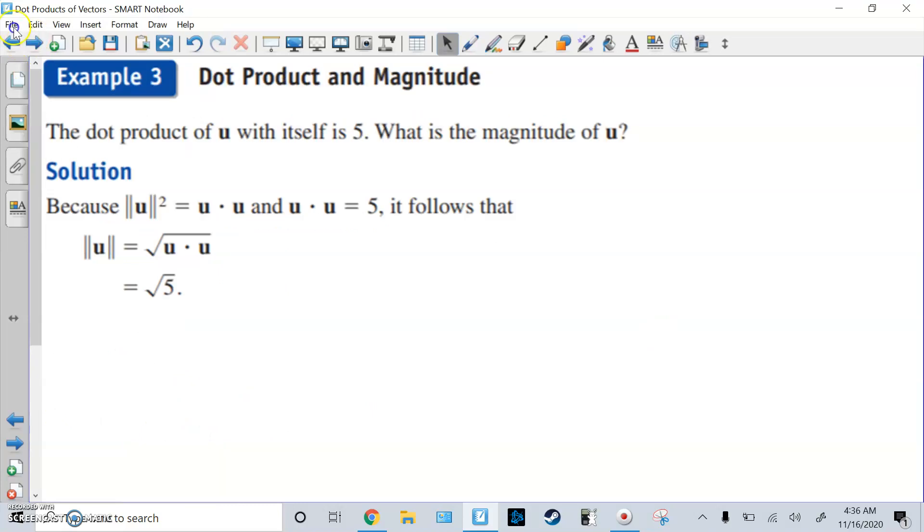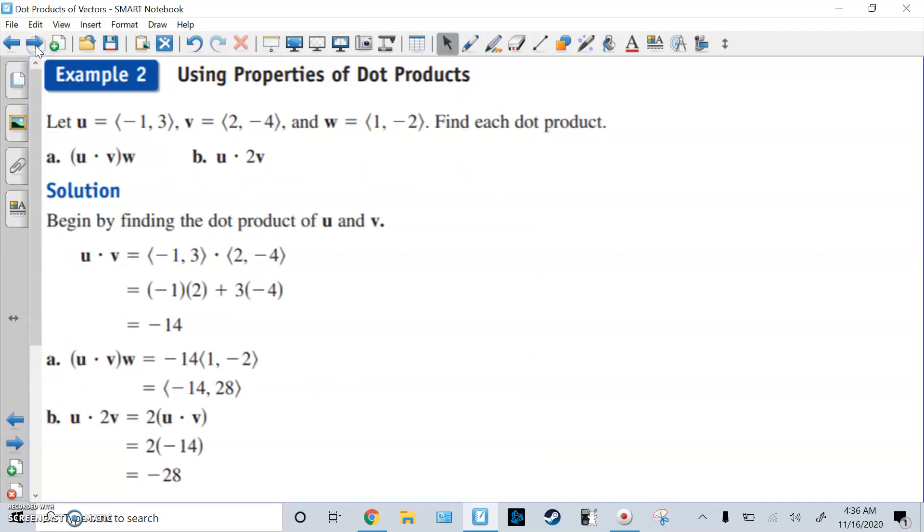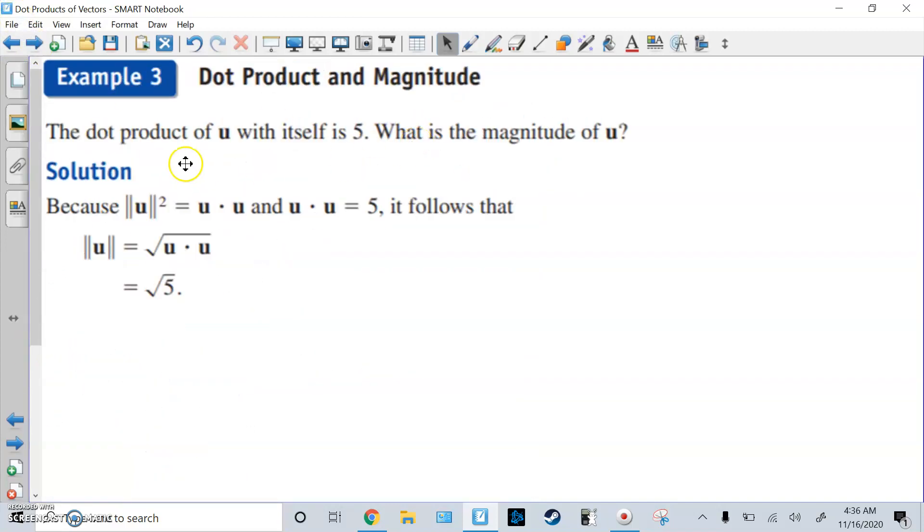Alright, dot product of magnitude from one of the properties, we notice V times V. So the dot product of V with itself is really its magnitude squared. So, if you know the dot product of U with itself is 5, what's the magnitude? So we'll use that formula. Magnitude squared is dot product U times U. If U times U is 5, you just fill it in. Just square both sides, you get square root of 5.